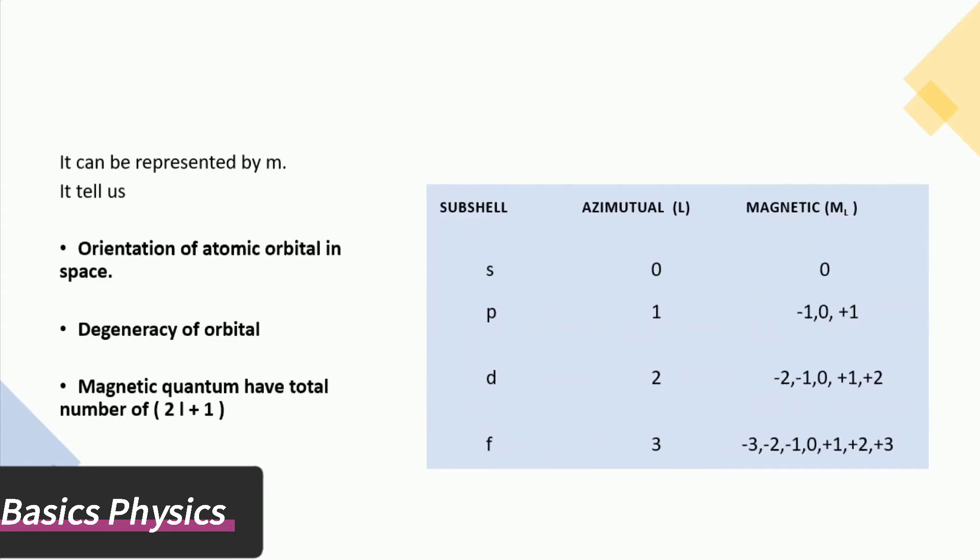For s orbital it has 0 degeneracy. For p orbital it has 3 degenerate orbitals. For d orbital it has 5 degenerate orbitals. For f orbital it has 7 degenerate orbitals.